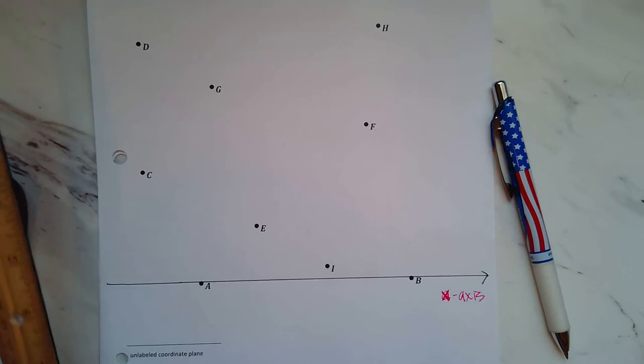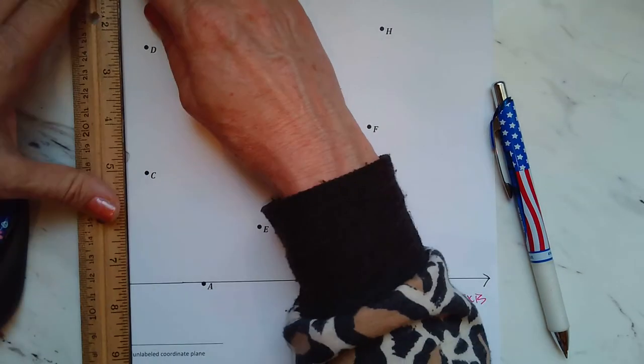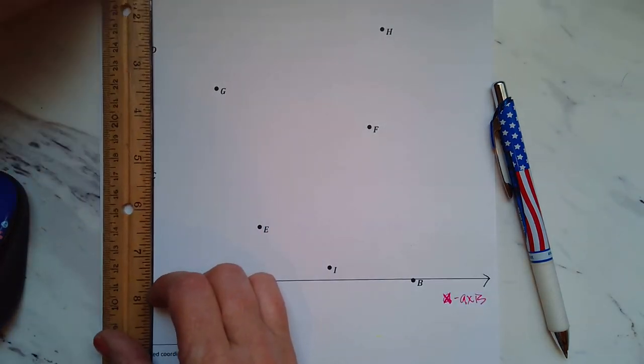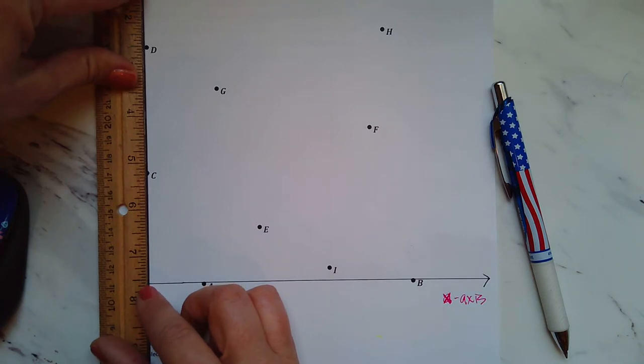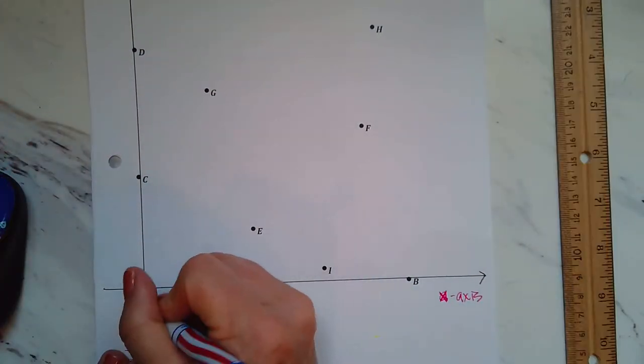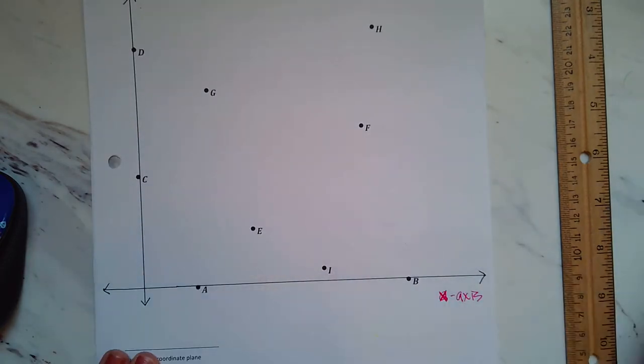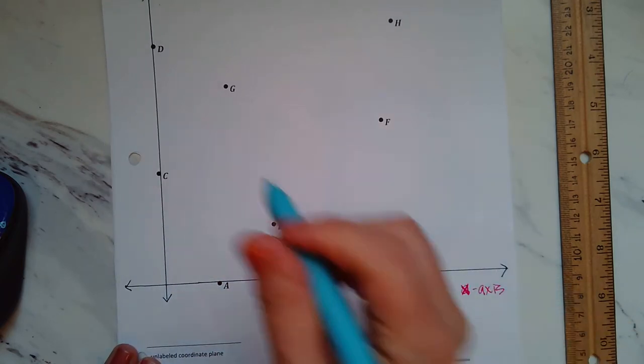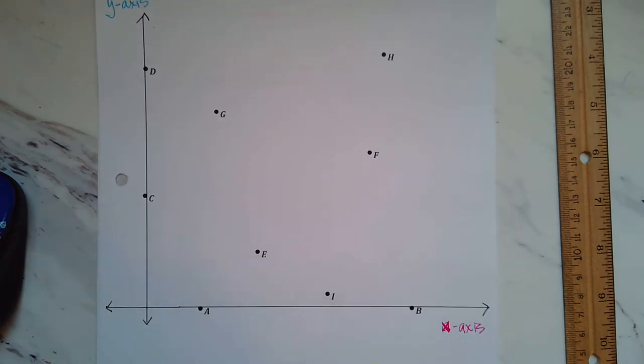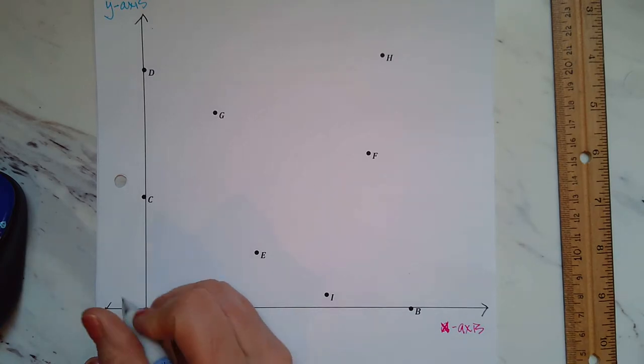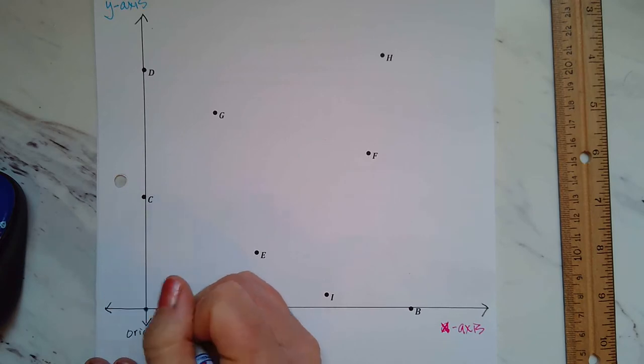Let's take our ruler and we're going to draw a perpendicular line through point C and D. Let's label the y-axis. So now you have your 90 degree angle. You have perpendicular lines, your x-axis and your y-axis labeled. From here, what is this called right here? You're right. It's called the origin. And what are the coordinate points of the origin? That's right. They are 0,0.